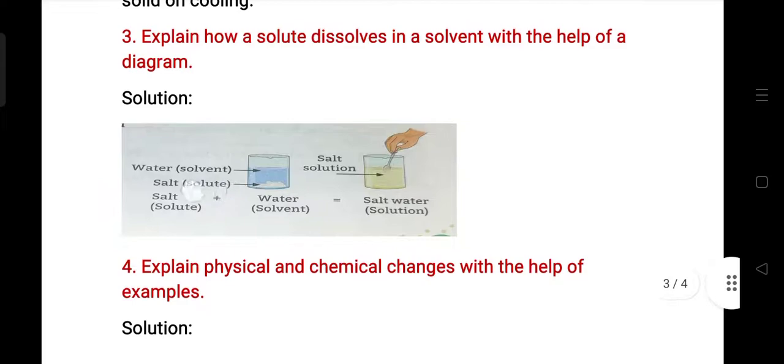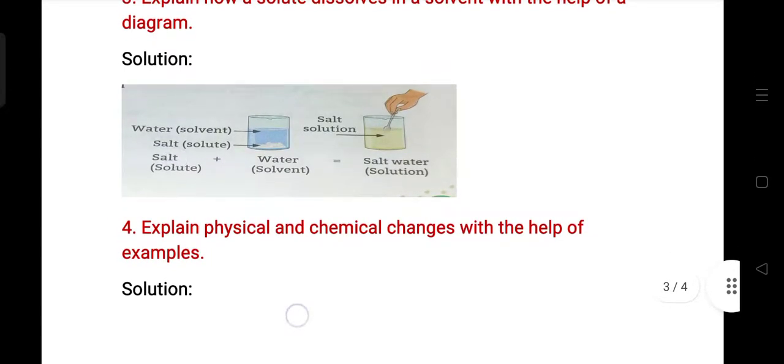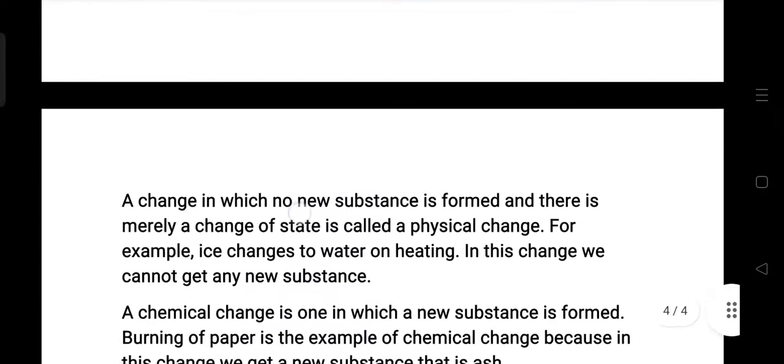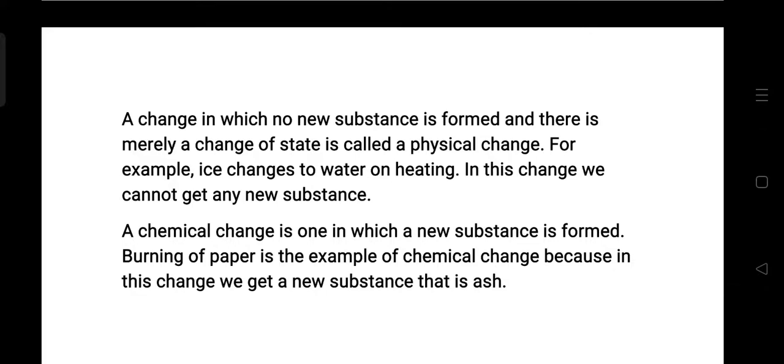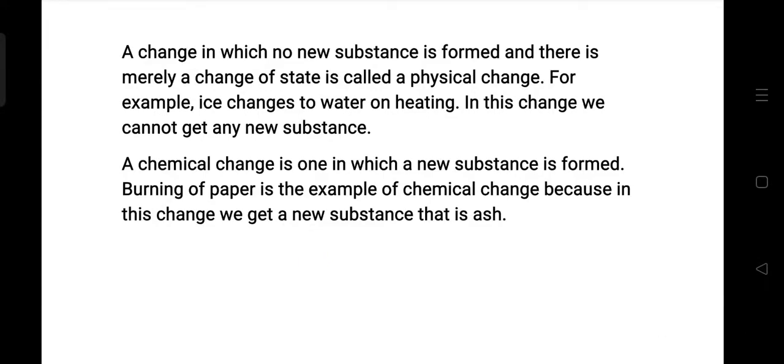Explain physical and chemical changes with the help of example. A change in which no new substance is formed and there is merely a change of state is called a physical change. For example, ice to water on heating. In this change we cannot get any new substance. A chemical change is one in which a new substance is found. Burning of paper is the example of chemical change because in this change we get a new substance, that is ash.